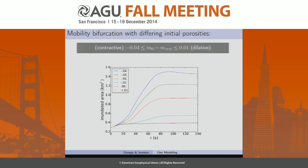Each one of these curves here, we're varying the difference in the solid volume fraction quantity so that it's becoming more contractive. As you can see, it expands to larger areas as we increase this degree of contractivity. The simulation shown in the previous slides is actually the red one here — the one that has liquefaction and runout. We see this bifurcation where we cross the zero point in the difference between the initial solid volume fraction and critical, and then all of a sudden we get much larger runouts.